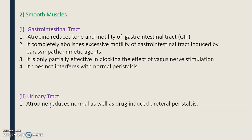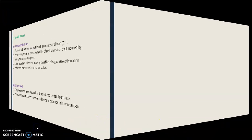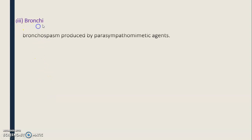Regarding the effect on the urinary tract, atropine reduces normal as well as drug-induced urethral peristalsis. It reduces the tone of the bladder muscle and tends to produce urinary retention.